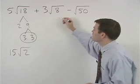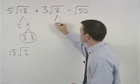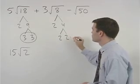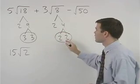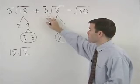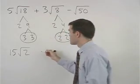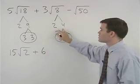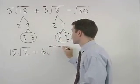In the second term, 8 factors as 2 times 4, and 4 is 2 times 2. So a 2 comes out, which multiplies by the 3 that's already out there, to give us 2 times 3, or 6. And again, we're left with a 2 inside the radical.